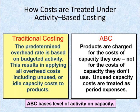The budgeted level of activity is always used in traditional costing systems. Using the budgeted level of activities to compute a predetermined overhead rate results in unused capacity costs being treated as a period expense rather than assigning them to products.